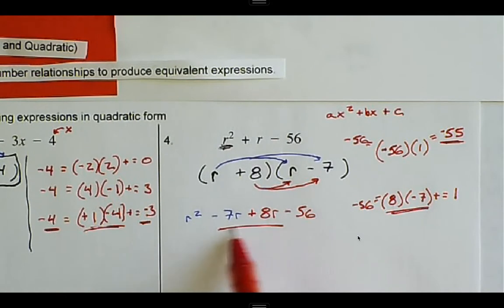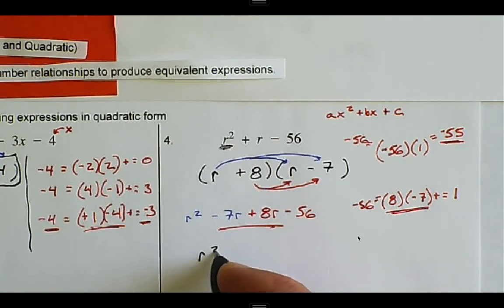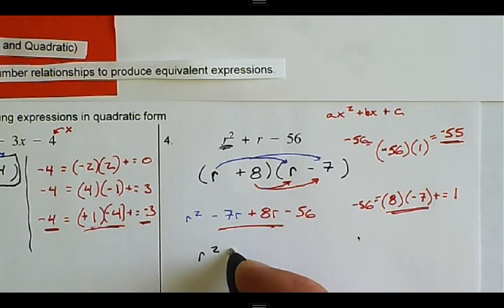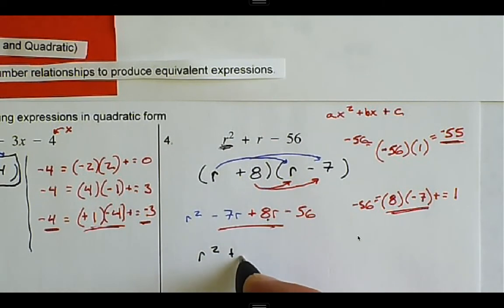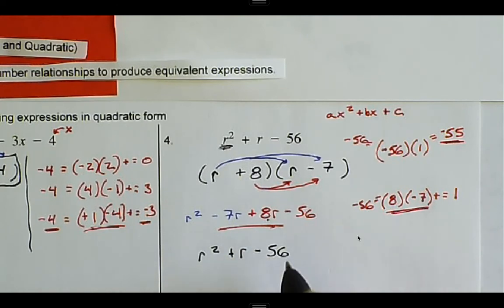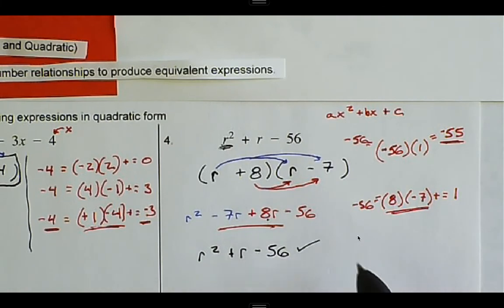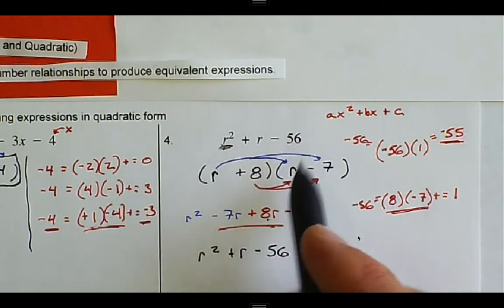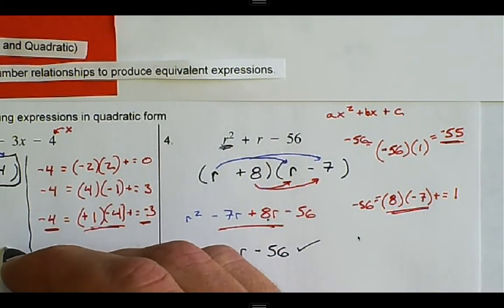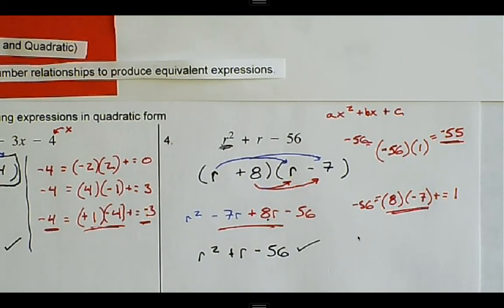Combining the middle terms: positive eight r and negative seven r gives plus one r. So we finish with r squared plus r minus 56, which matches what we started with. The factored form is confirmed correct.